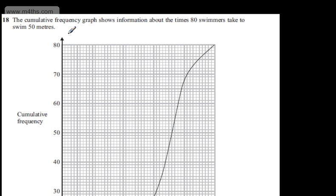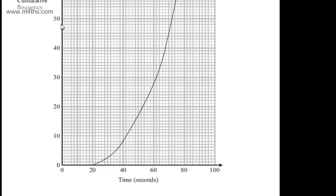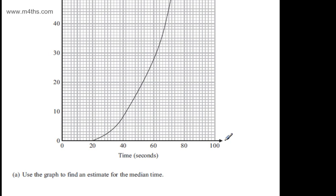This is question number 18. We're told the cumulative frequency graph shows information about the times 80 swimmers take to swim 50 metres. So we have the cumulative frequency up to 80 and the time in seconds up to 100.